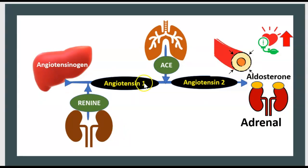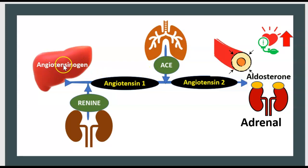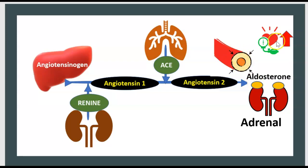Angiotensinogen gives angiotensin I and then angiotensin II, which acts on the adrenal gland to produce aldosterone. Aldosterone causes vasoconstriction and leads to hypertension. Angiotensin I is produced by renin from the kidney, angiotensin II is produced by ACE from the lung, and angiotensin II acts on the adrenal gland to cause vasoconstriction and hypertension.